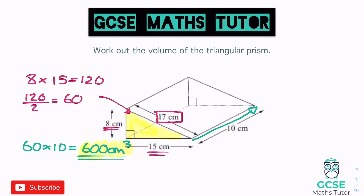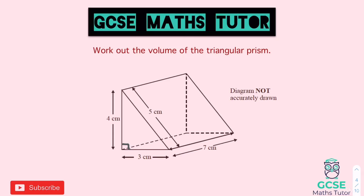As you can see, once we've learned to find volume by identifying the cross section, it applies very nicely to any prism. You just need to make sure you know your area formulas — in this case half base times height. There is one length you're not going to need. Work out the volume of the triangular prism, making sure you get the area of the cross section and then multiply by the depth. Pause the video, have a go.